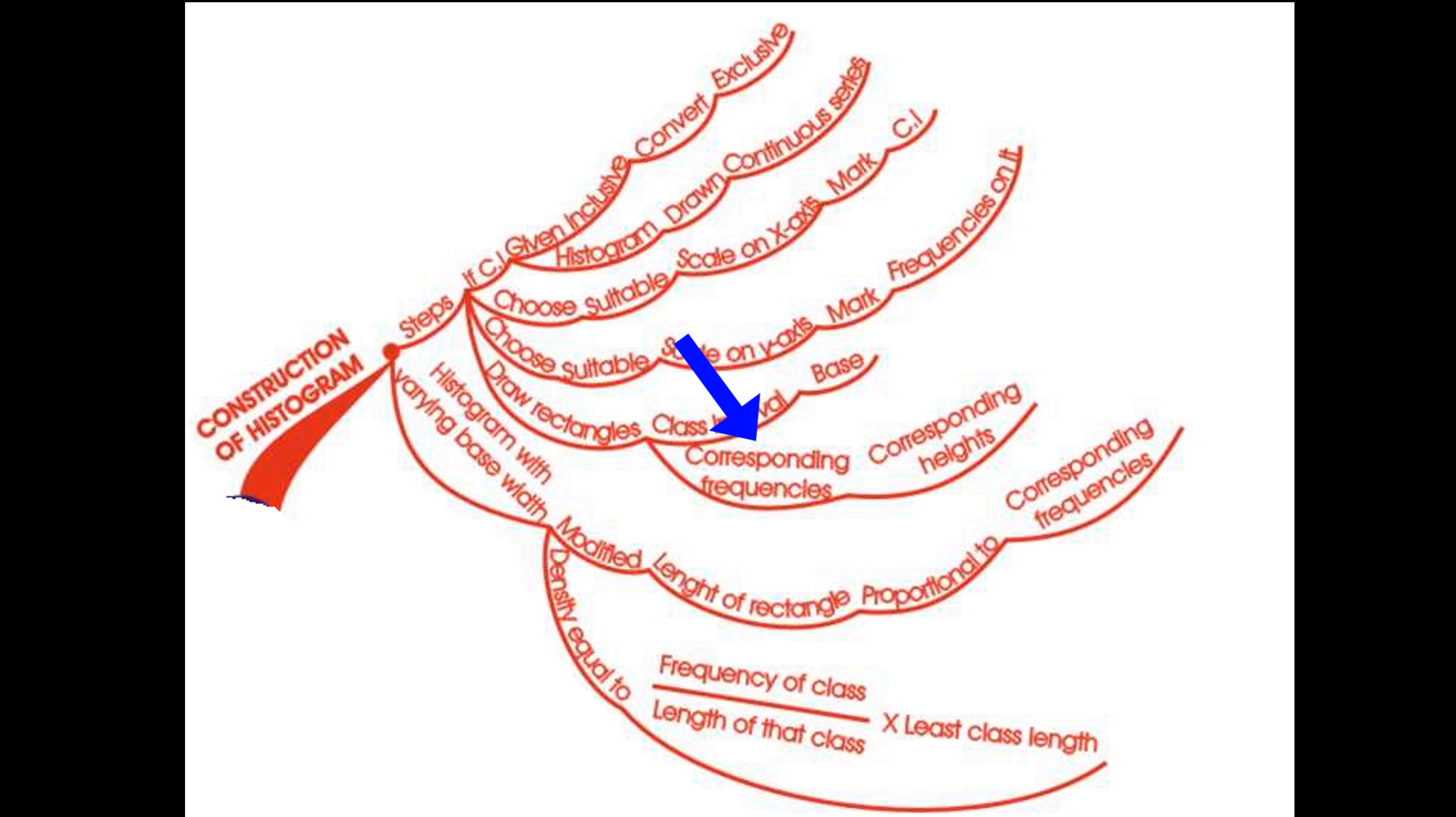And the corresponding frequencies as corresponding height. Histogram with varying base width: Modified length of any rectangle is proportional to the corresponding frequencies, so density equals frequency of class divided by length of that class, multiplied by least class length.